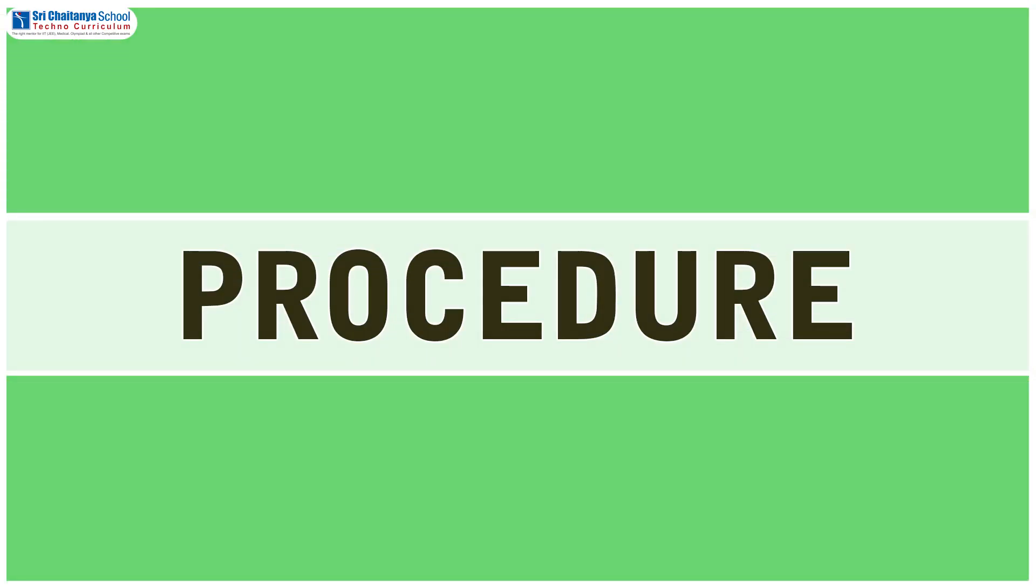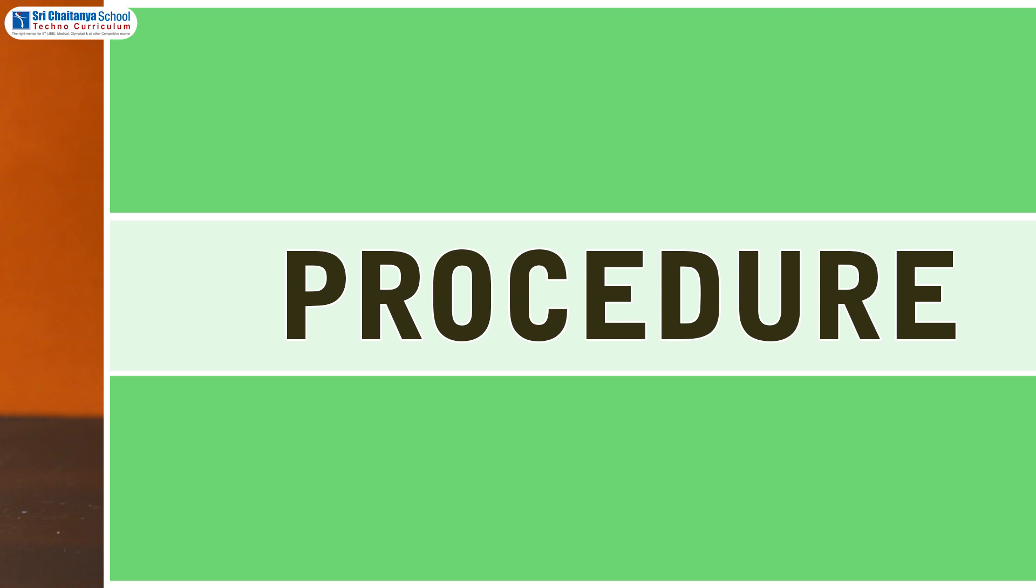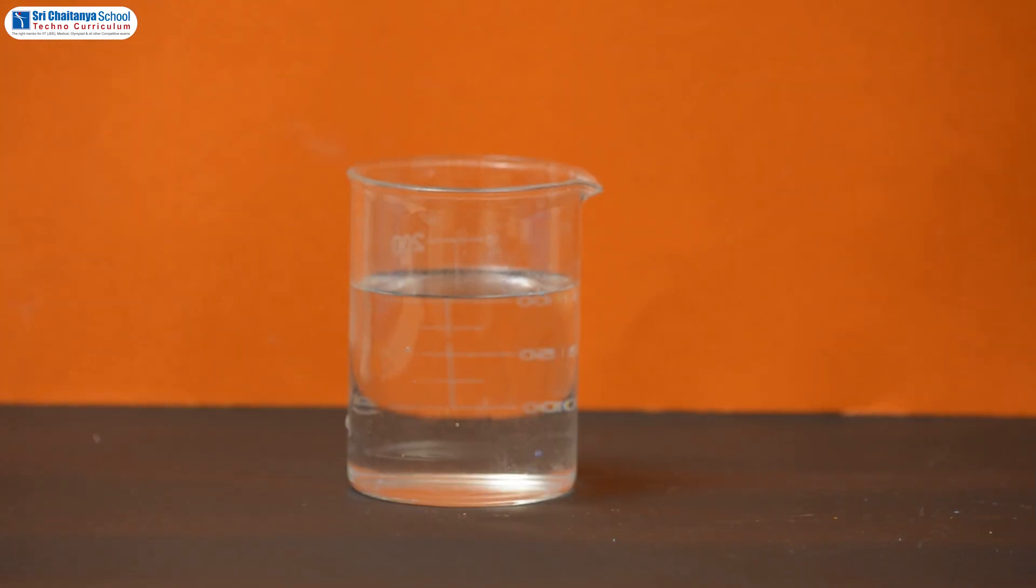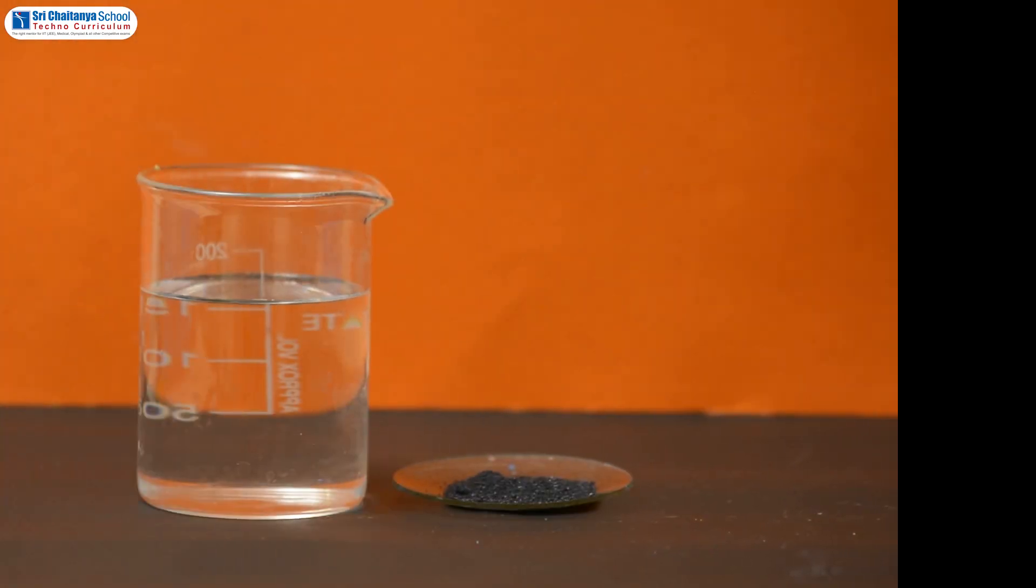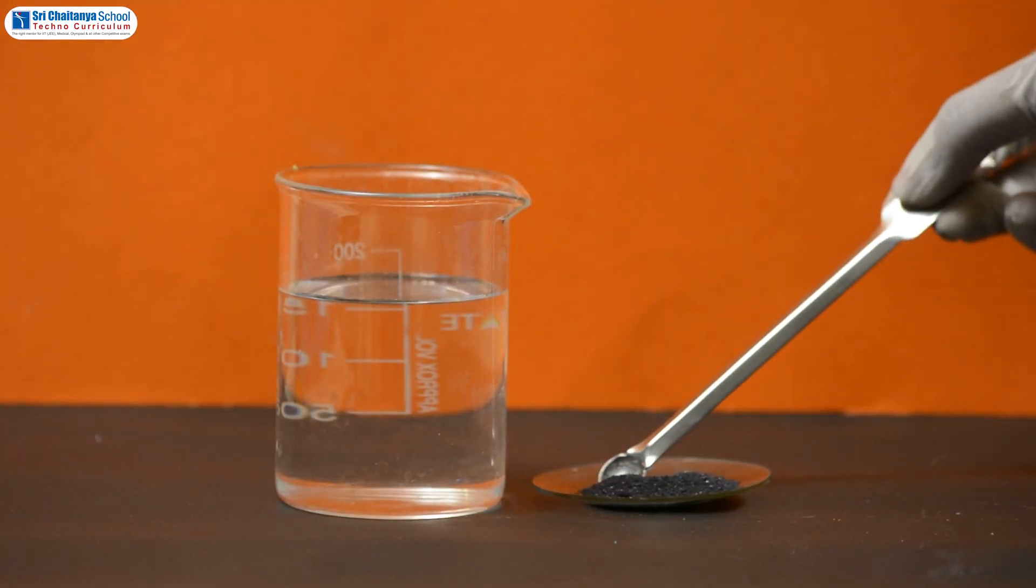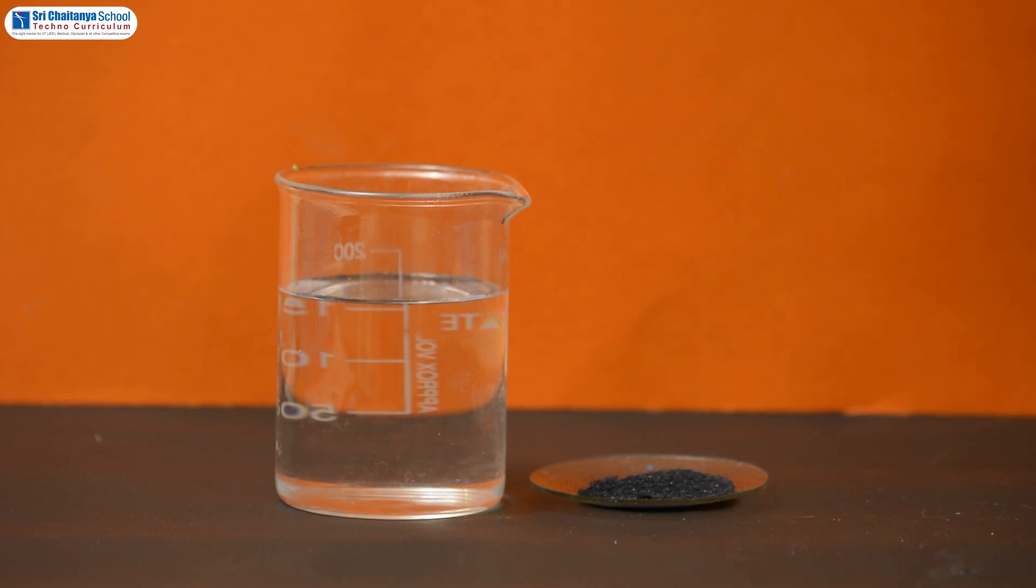Now it is time to see the procedure. Take a beaker with clean water. Now add a pinch of crystals of potassium permanganate and dissolve them thoroughly.